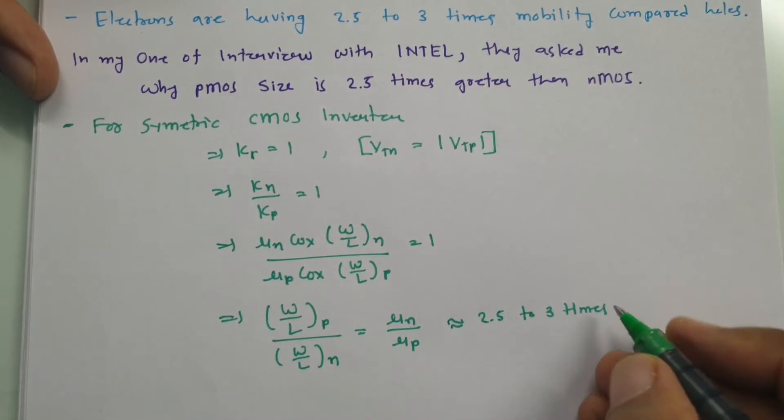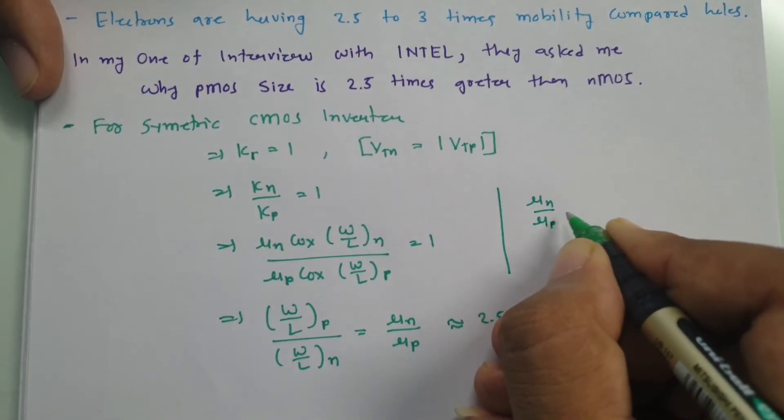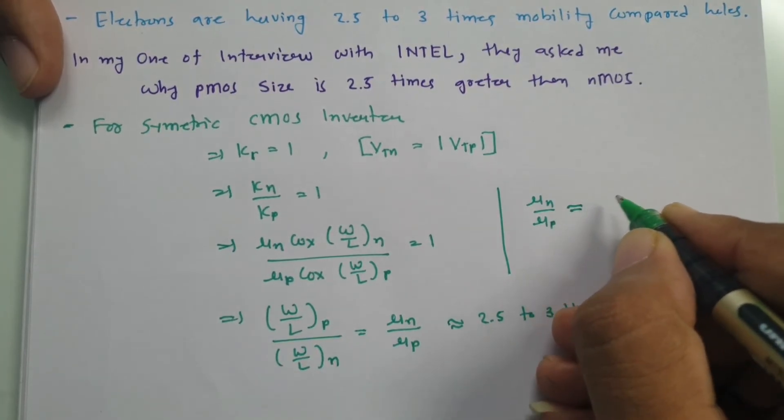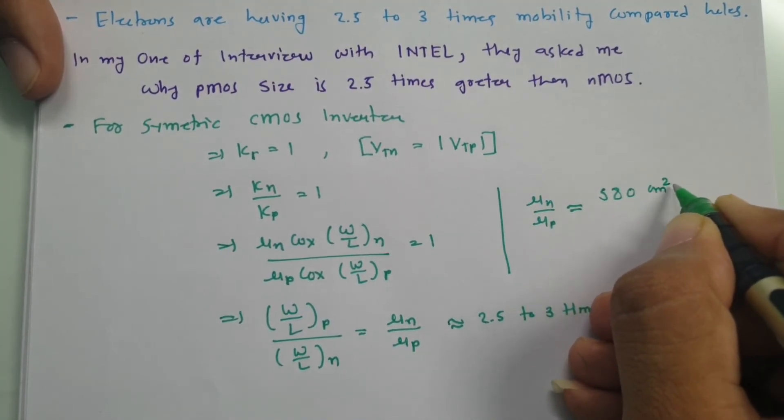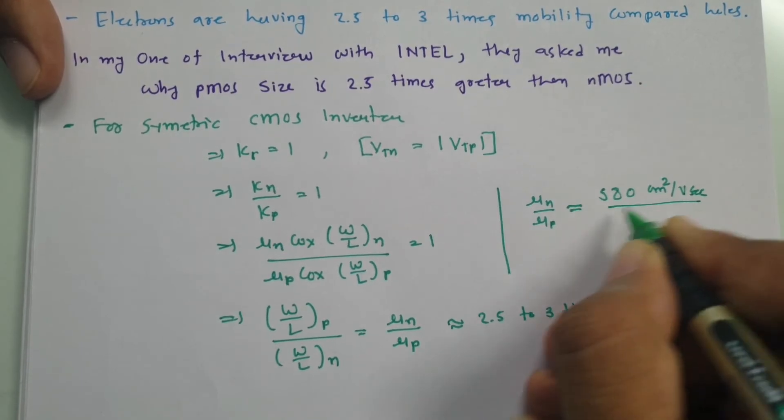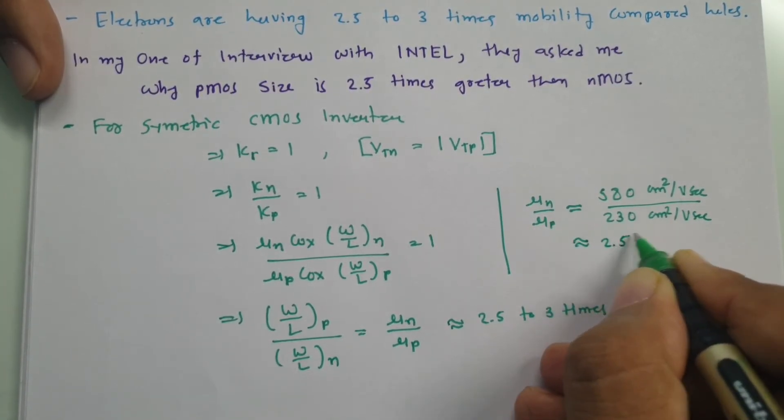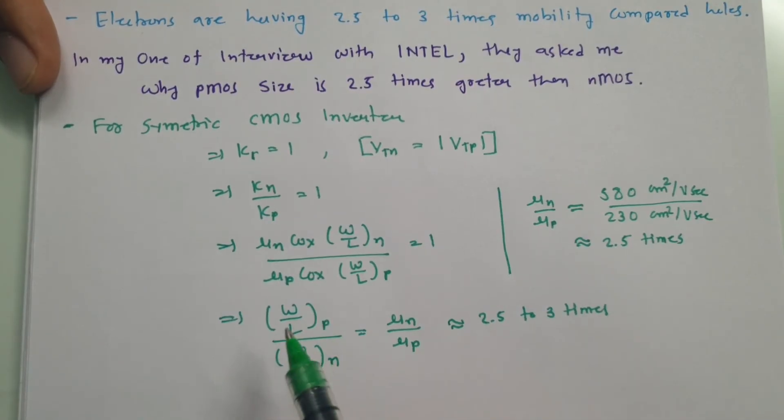You will be finding in many books some values will be there. If you see mu N by mu P with some practically integrated ICs, then I will show you some of the basic values. With mu N, I have seen one IC that is been fabricated by 580 cm² per volt second divided by this mu P, that value was 230 cm² per volt second. If you calculate this, that will be almost 2.5 times. So that even explains you this size of PMOS, that is 2.5 to 3 times greater compared to NMOS.